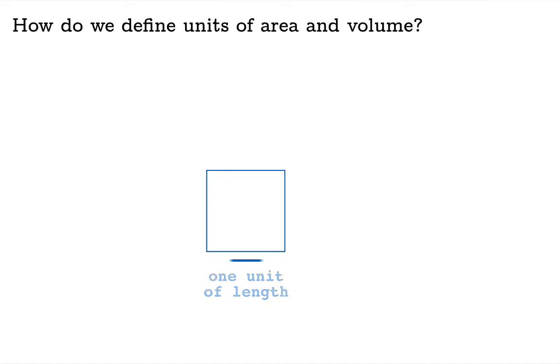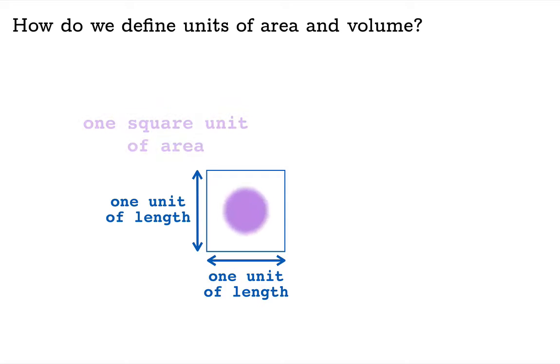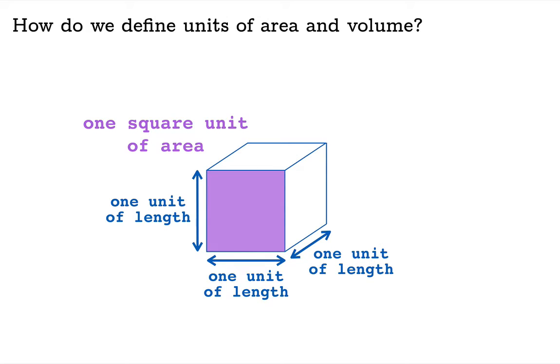We need units for all of these things. So once you pick a unit of length, if you build a square with edges that are both one unit of length, then by definition you have one square unit of area. And if you build a cube with one more dimension of unit length, then by definition that cube encompasses one cubic unit of volume. You need to remember this very basic definition.